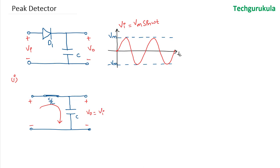Let's represent the output voltage in green (V₀). The capacitor voltage, which is the output voltage, keeps increasing as it follows the input voltage. But when it reaches the peak value Vm, the input voltage then decreases. At that point, the voltage at the P side of the diode would be less than the N side, so the diode becomes reverse biased. This is at t = T/4. So for t between 0 and T/4, the capacitor gets charged from the input and reaches the peak value Vm.